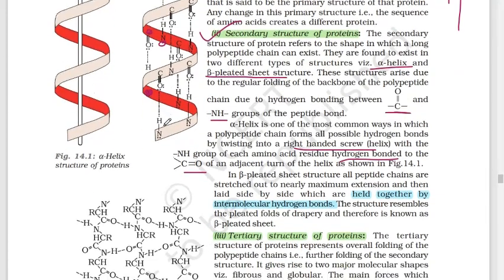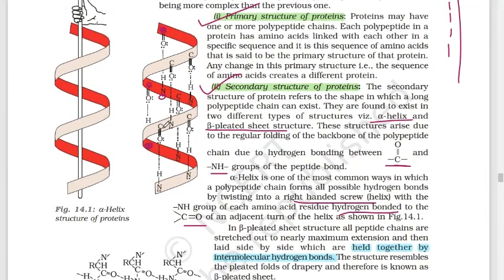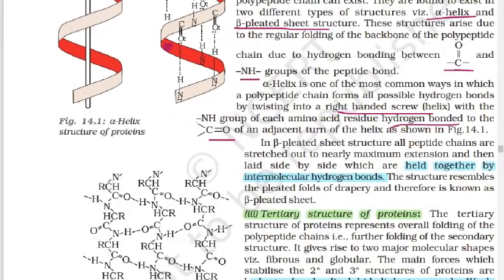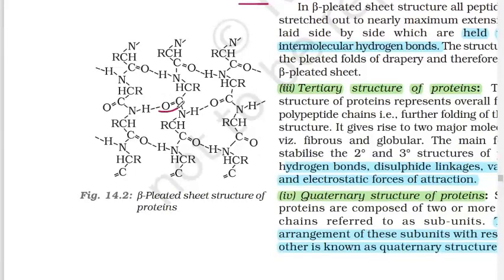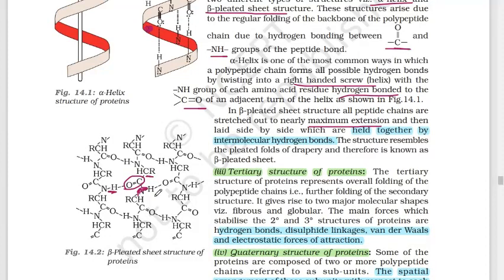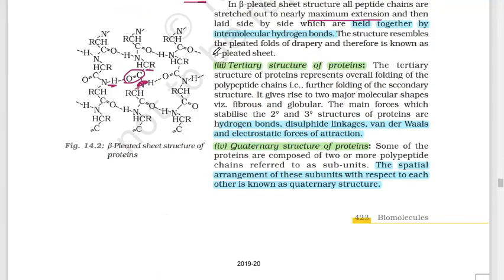In the alpha helix, there are little turns visible at regular intervals. In the beta pleated sheet structure, all peptide chains are stretched out to nearly maximum extension, and then laid side by side, held together by intermolecular hydrogen bonds.